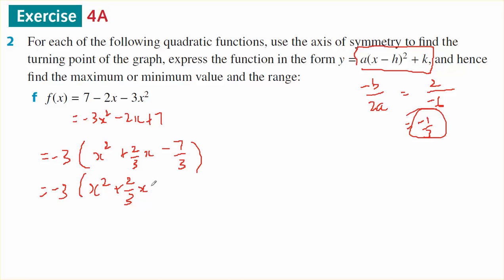Half of 2/3 is 1/3, 1/3 squared is 1/9, minus 1/9, minus 7/3, which is 21/9.